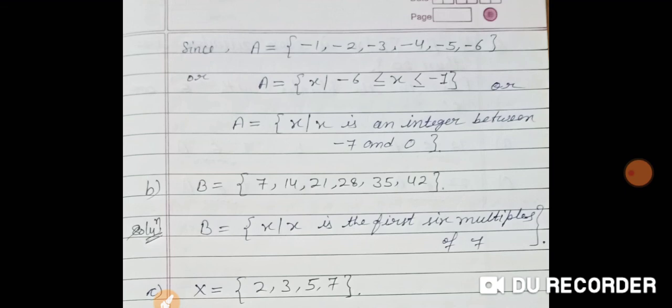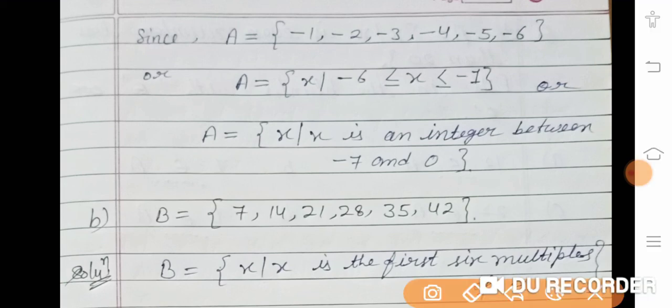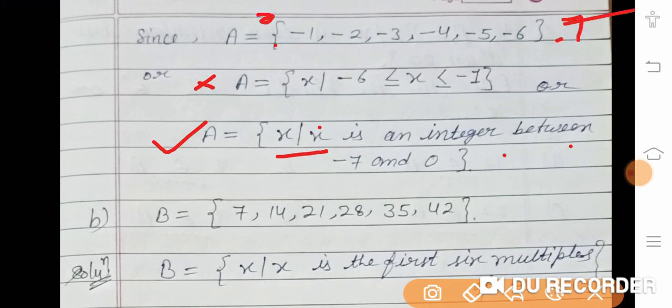A = {-1, -2, -3, -4, -5, -6} is given. You have to represent it in set builder form. So A = {x | x is an integer between -7 and 0}.